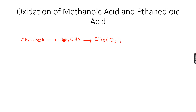This is how oxidation takes place, but we never oxidize the acid further because ethanoic acid cannot be oxidized. However, we can oxidize two acids: methanoic acid and ethanedioic acid. We will see how the conditions for their oxidations vary.